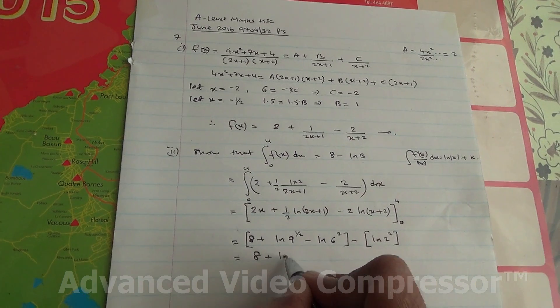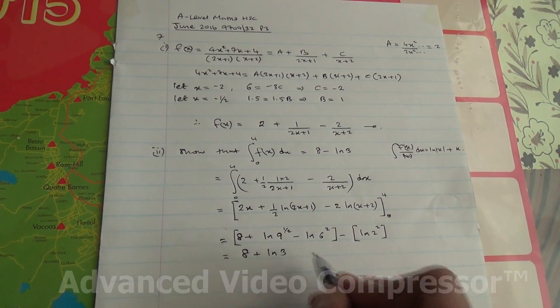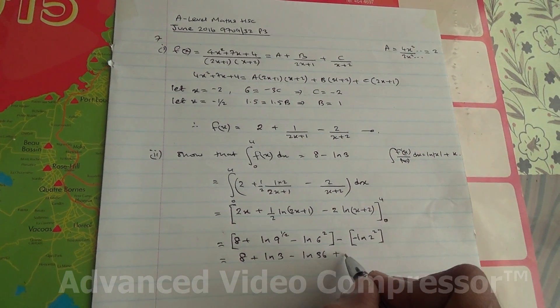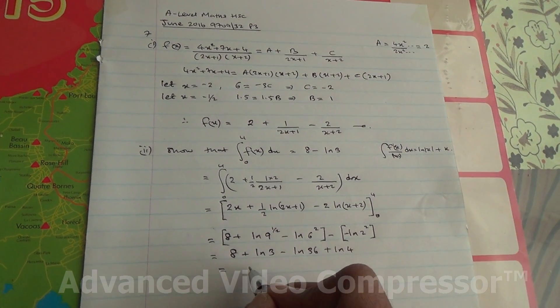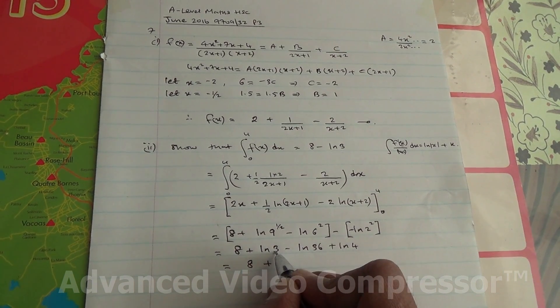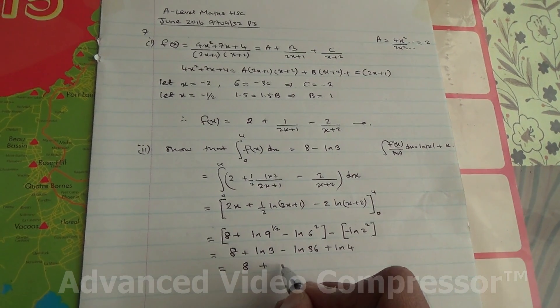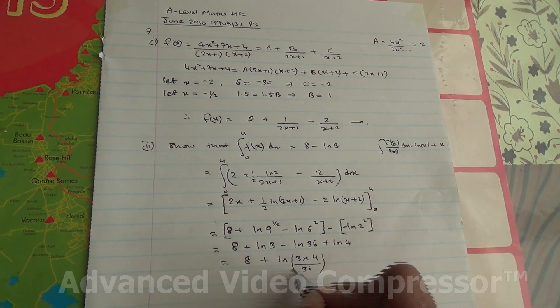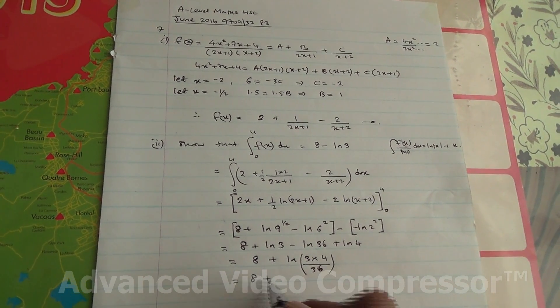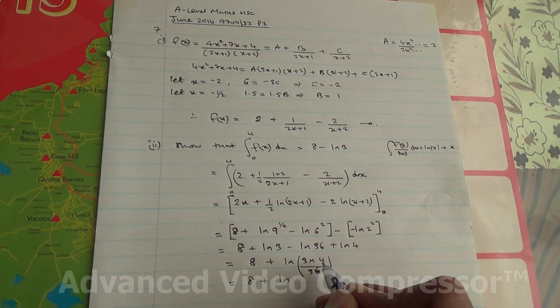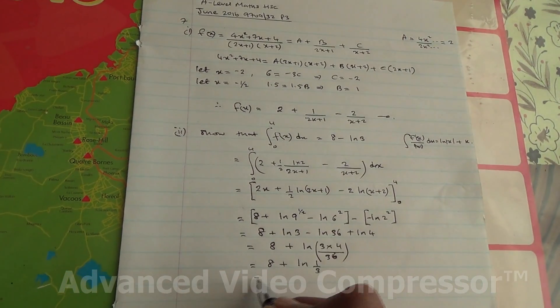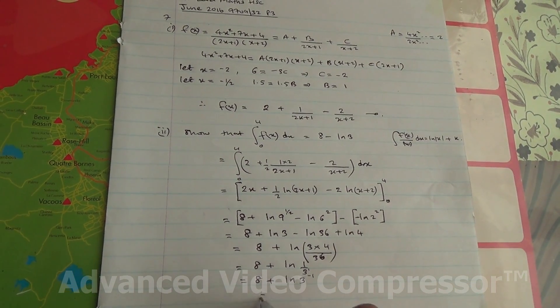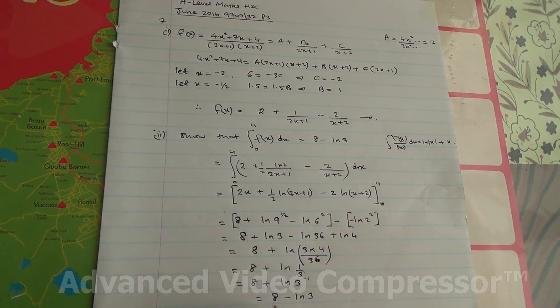Right, so from here we've got 8 plus ln 3, because 9 to the power of half is like the square root of 9, minus ln 36. This was minus, so minus minus becomes plus ln 4. So we have then 8 plus ln 3 plus ln 4, which is multiplication. So we've got ln(3 times 4), and for subtraction it becomes divide. So divide by 36. Therefore, we have 8 plus ln(12 over 36), which is 1 third. So it is 8 plus ln(3 to the power of minus 1). This power is 1, and therefore, we have then 8 minus ln 3. And this has been shown.